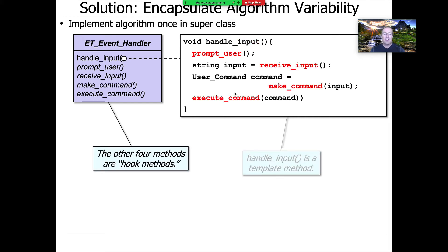The other methods we have here, prompt user, receive input, make command, execute command, are called hook methods or primitive operations. The Gang of Four book uses the word primitive operation. I like the word hook method better. A template method is implemented once using calls to a bunch of hook methods.